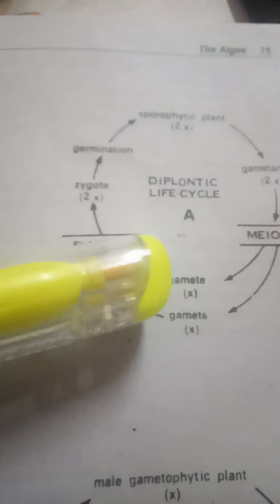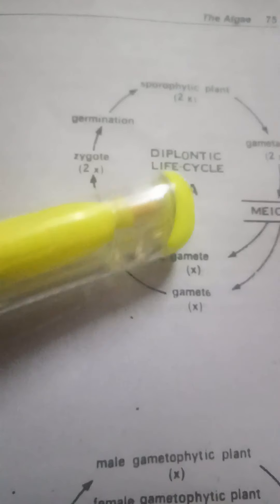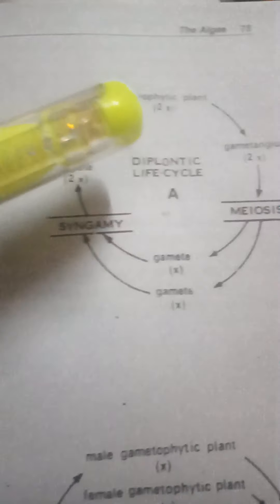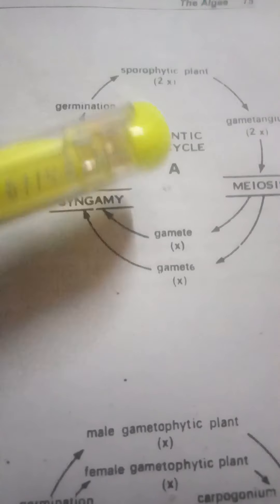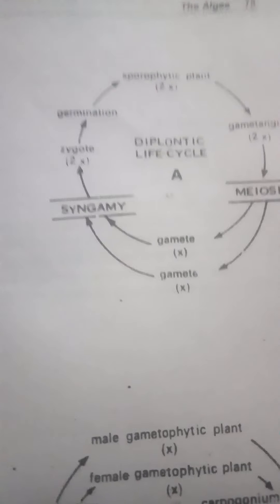It is not a multicellular plant or algae body entirely haploid; the haploid phase occurs only at the time of gamete formation. So in this life cycle, the diploid phase dominates — involving sporophytic plants, gametangia, zygote, etc. This is called the diplontic life cycle.